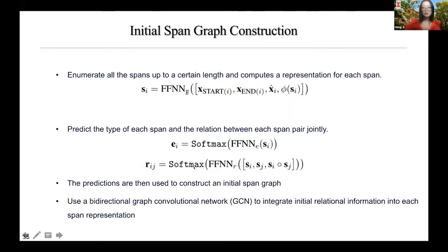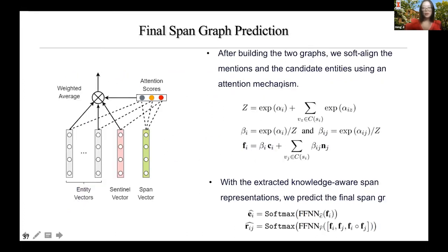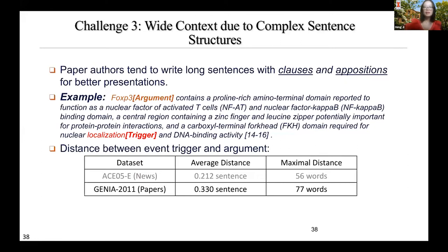For FKBP12, the external database tells us it is more likely a protein because it has many interactions with other entities. For the initial span graph, we consider all spans up to a certain length (e.g., 10 tokens), compute representations for each candidate, and jointly predict type and relation for every span pair. Once we have the actual graph from the external database, we merge the initial span graph and actual graph by soft-aligning them using an attention mechanism — aligning entities whose embedded representations are very similar, treating it as a graph-to-graph alignment problem.